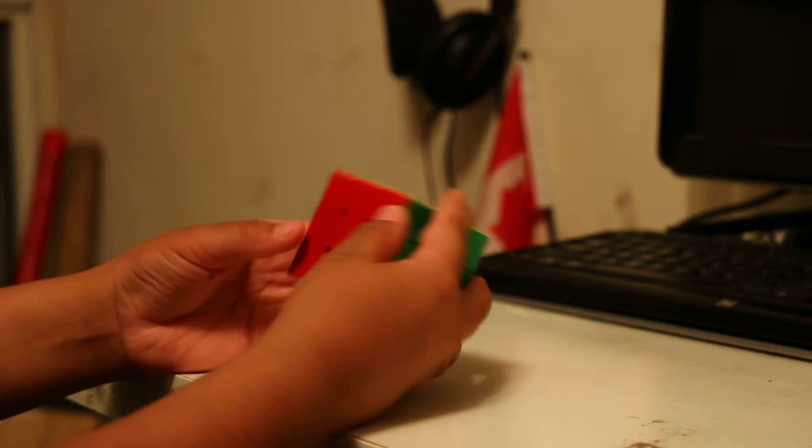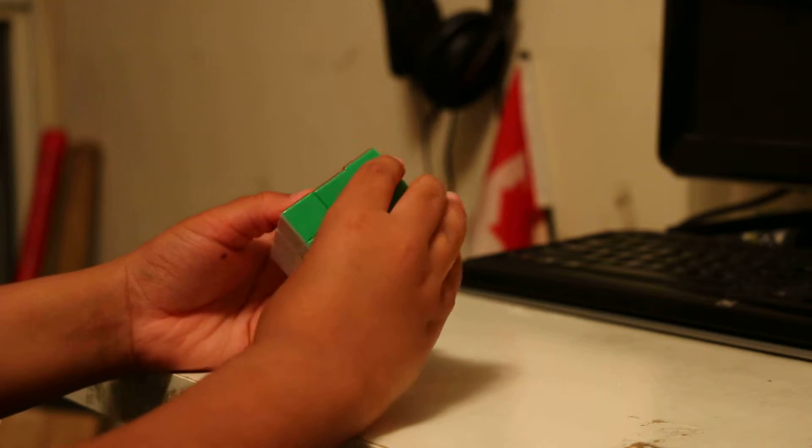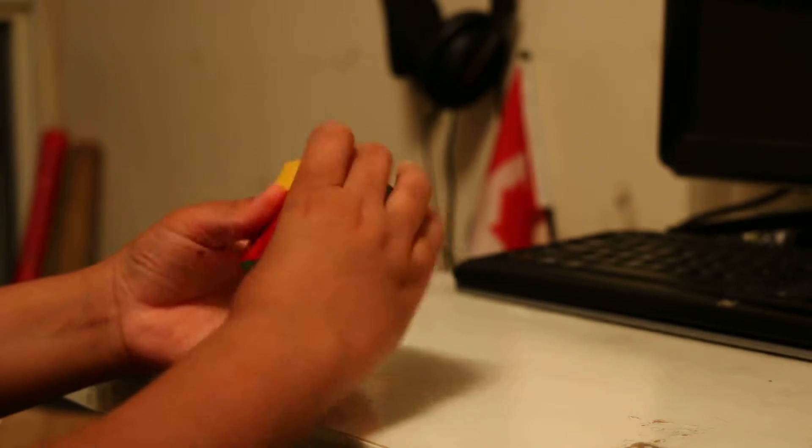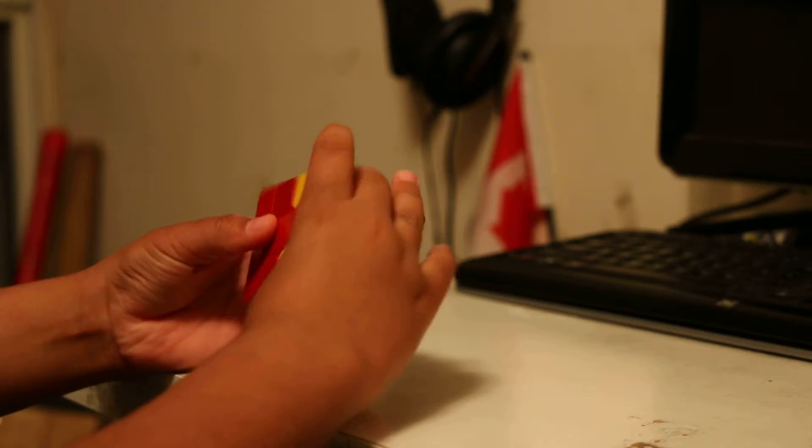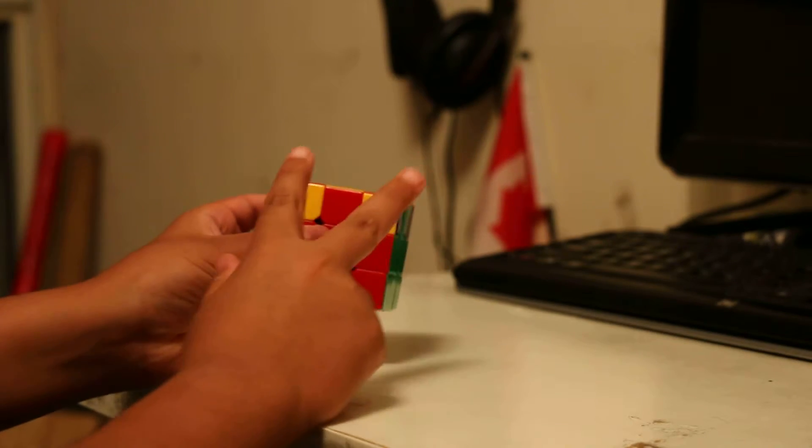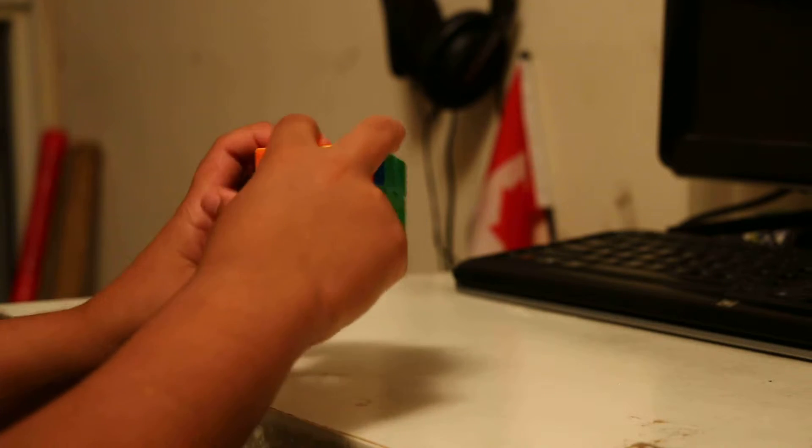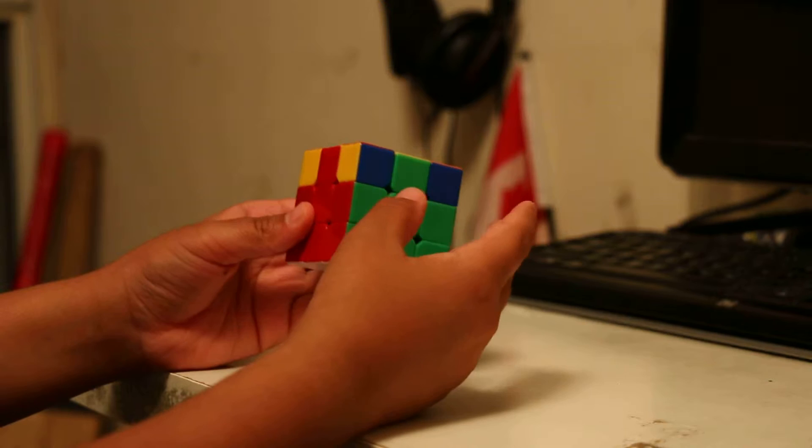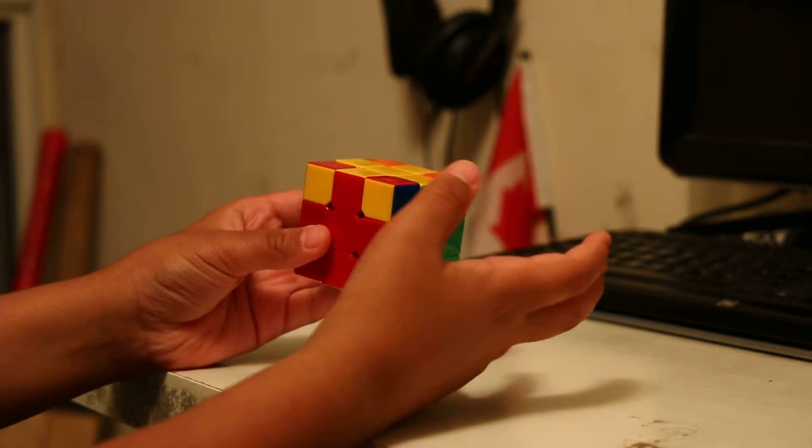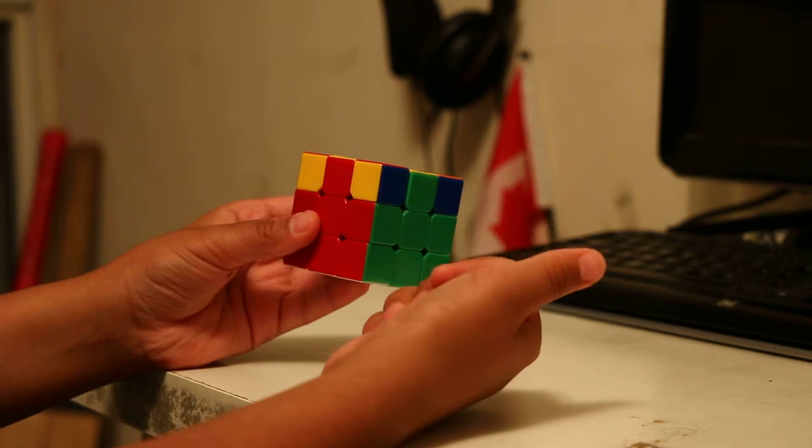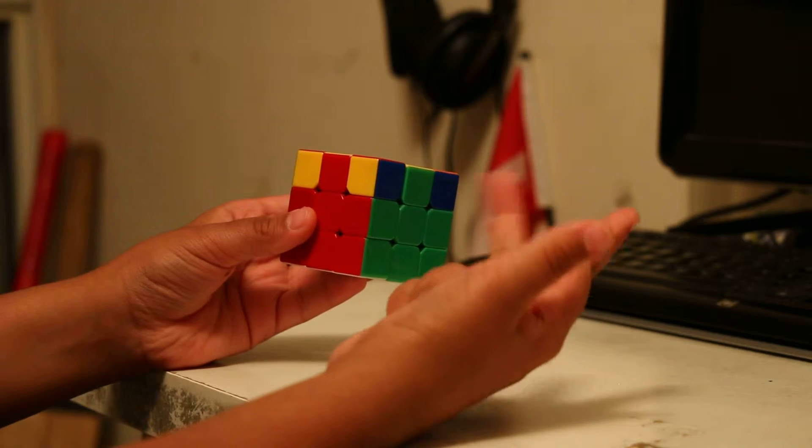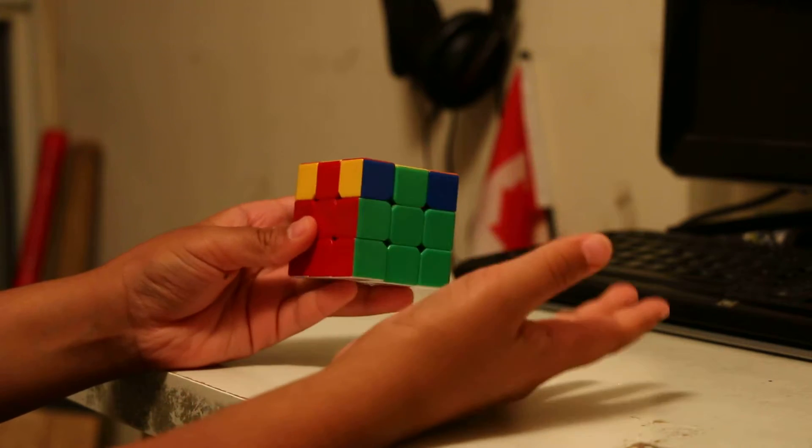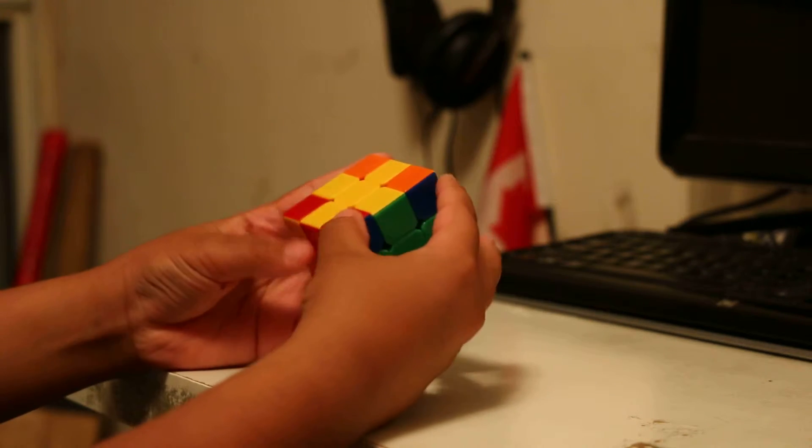Hey guys, what's up? Today I'm going to show you COLLH. COLLH is algorithms for when you have the cross and the yellow corners opposite but unsolved. It gives you an EPL or HPL, which are the U perms, the Z perm, and the H perm, and it has a higher chance to give you a PLL skip.